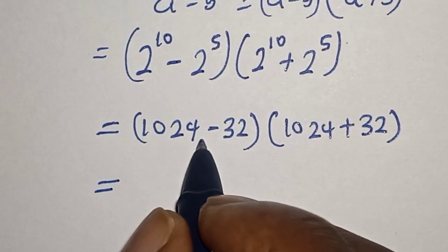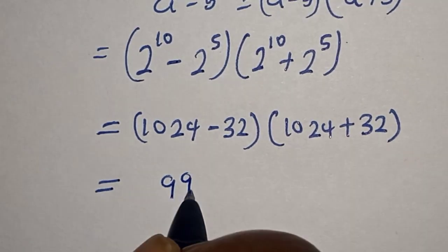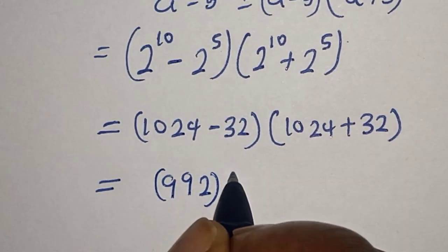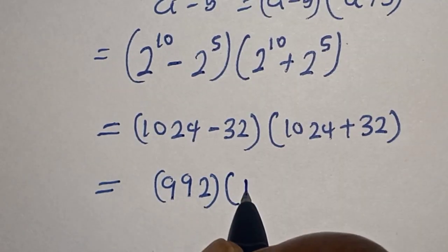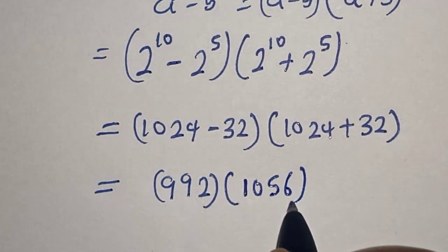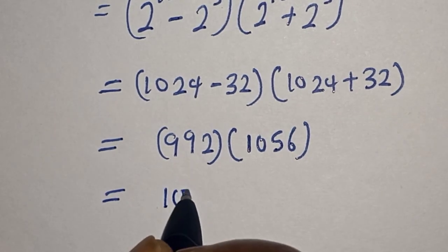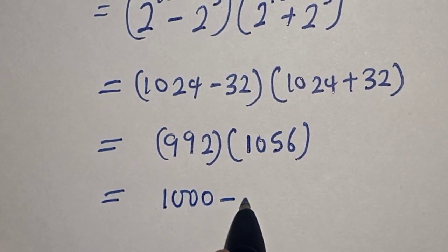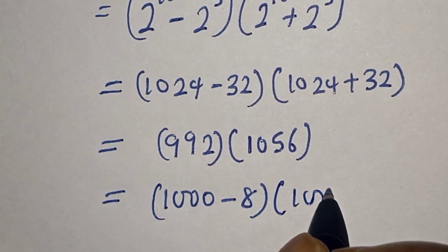This equals 992 multiplied by 1056. We can rewrite this as 1000 minus 8, multiplied by 1000 plus 56.